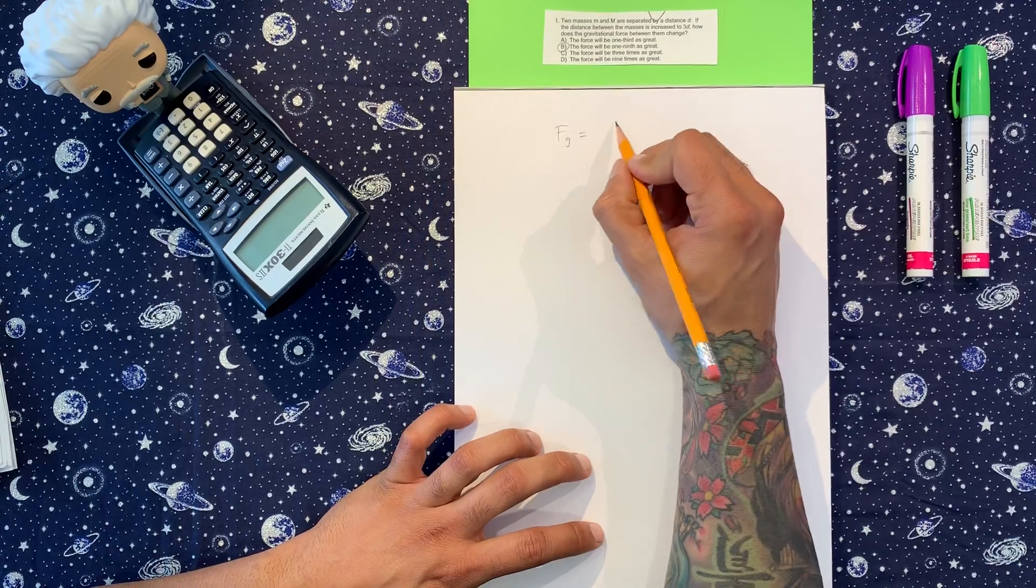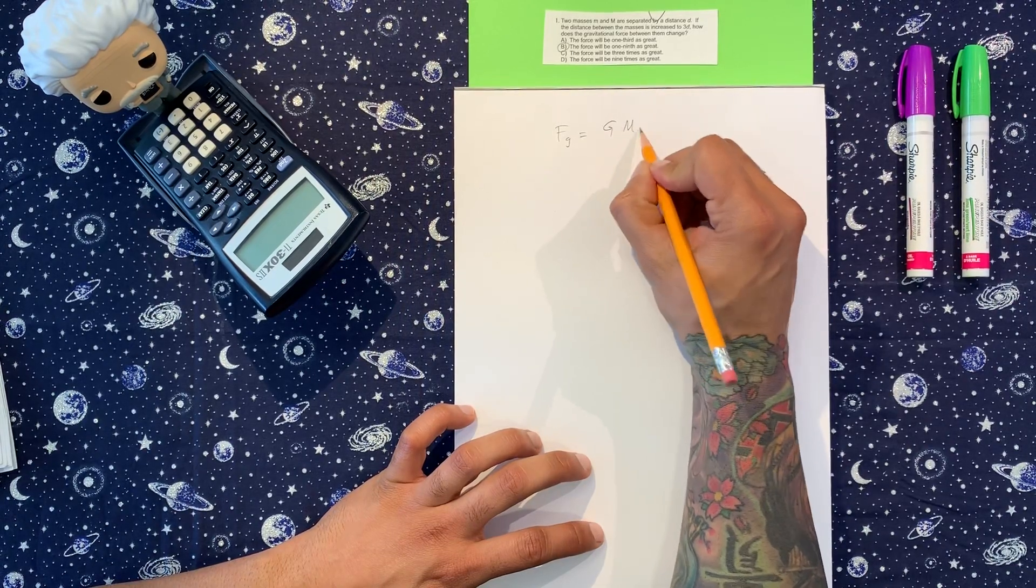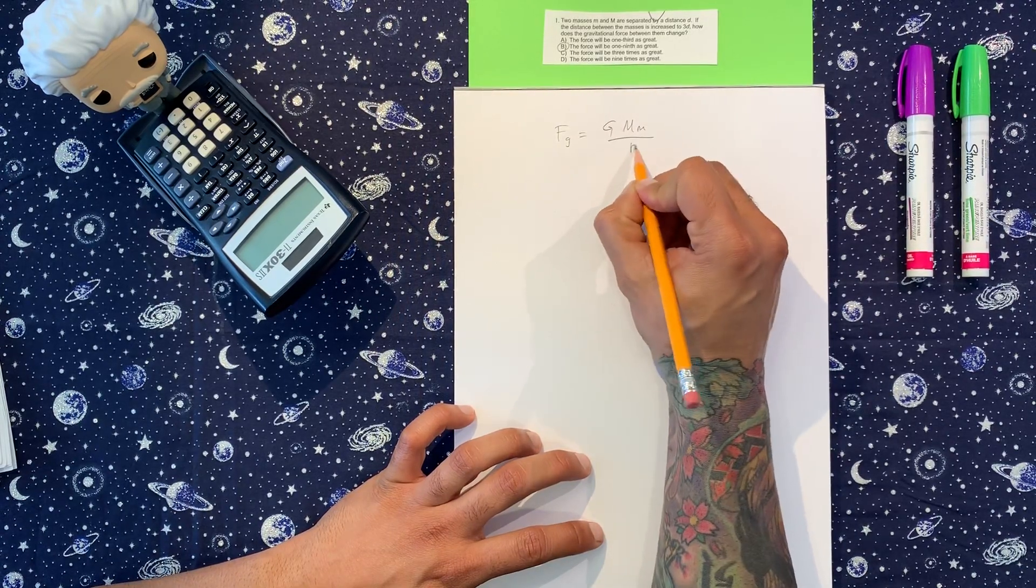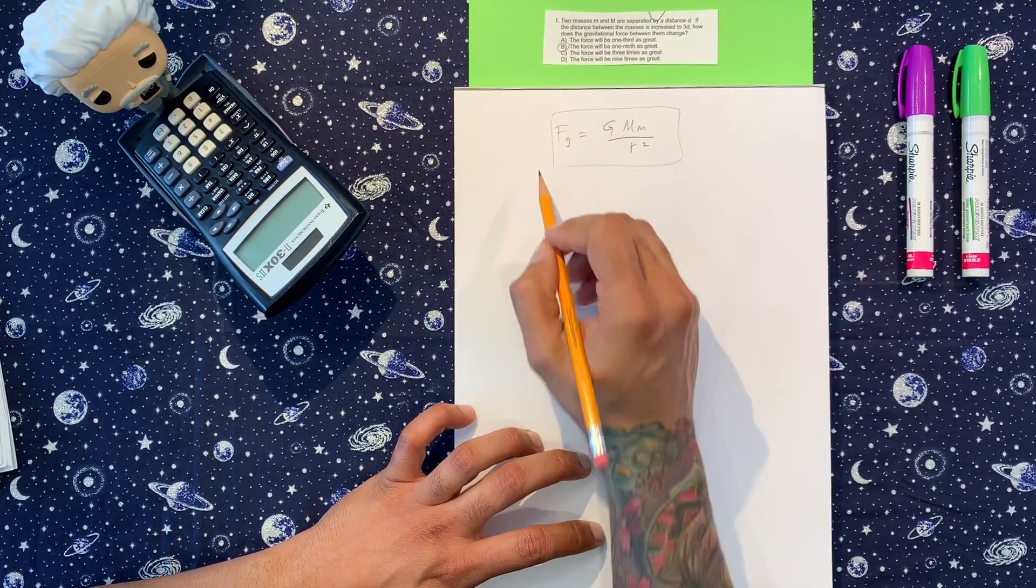All right, so first we need the formula for gravitational force, which is F equals G, big M, little m, over r squared, which is the distance between them.